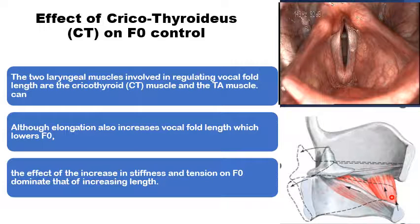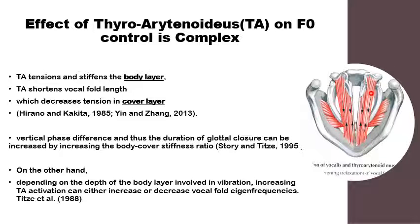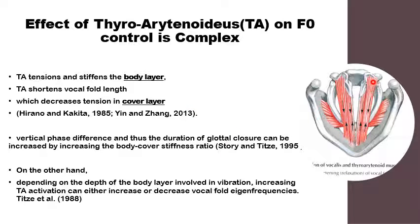The net result of activation of the cricothyroid muscle on the fundamental frequency is to increase the fundamental frequency through its effect on the vocal fold stiffness. The effect of the thyroarytenoid muscle — the vocalis muscle — on the vocal fold fundamental frequency is a little bit more complex. The thyroarytenoid muscle tends to stiffen and tense the vocalis muscle itself, the body layer of the vocal fold tissues, the core layer. But at the same time, it shortens the vocal fold length, and this would lead to a decrease in the stiffness of the cover layer of the vocal fold. So there would be an increase in the stiffness of the core layer and a decrease in the stiffness of the cover layer.